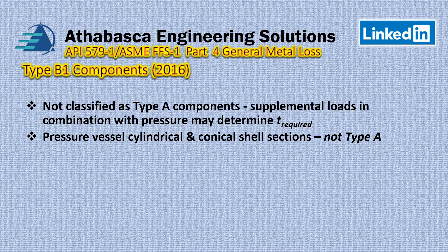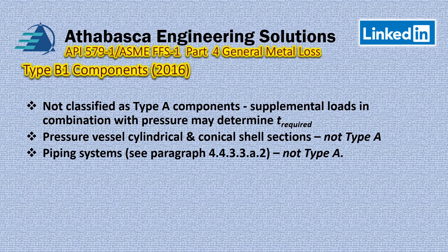Pressure vessel shells and conicals that are not Type A fall into the B1 category. Piping systems covered under section 4.3.3.A.2 — with all those considerations about stiffness — would also be analyzed here. It's a non-Type-A system where we want to see the interaction between stiffness and stress.